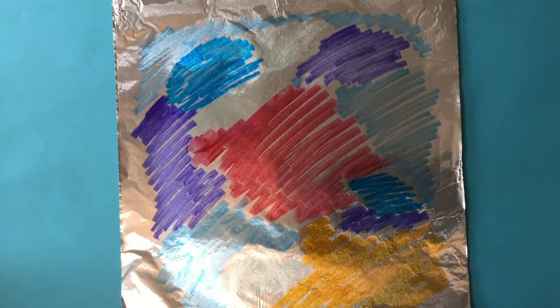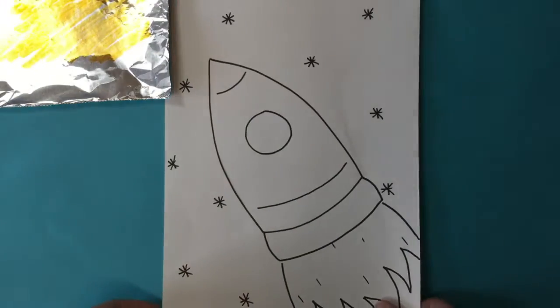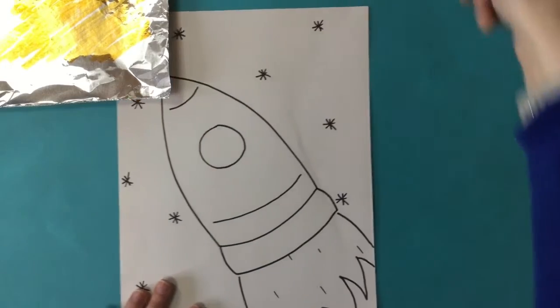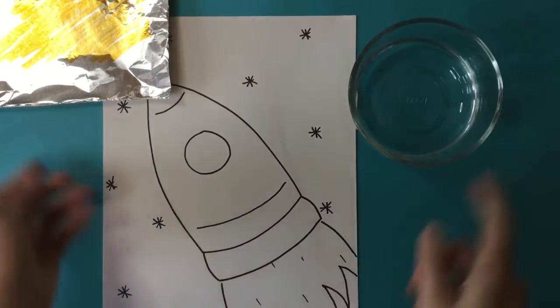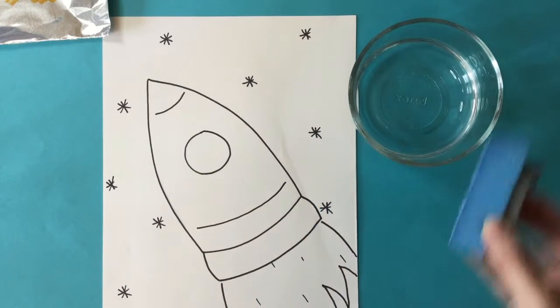Once your foil is totally colored and ready to go, you can set that off to the side. We're going to get our white paper that has our drawing on it and either your water and sponge or your spray bottle, whatever you're using to add water to your paper.